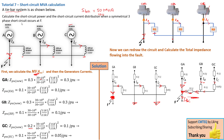Hey guys, thanks for tuning in to SimTech channel. This is part two of tutorial seven on short circuit MVA calculation. From where we left off on this circuit, we were reducing our equivalent network into a smaller network so that we can calculate the total per unit impedance. The goal here is to calculate the short circuit MVA that will develop at point F.